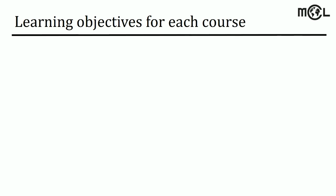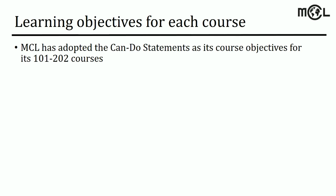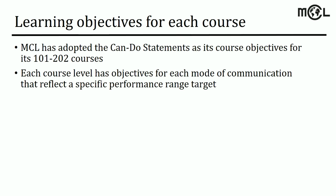Let's talk about the learning objectives for each course that relate to the language modes of communication. We have adopted as a department the can-do statements we saw at the end of the previous video as course objectives for our 101 to 202 courses. Each course level — 101 through 202 — has objectives for each mode of communication that reflect a specific performance range or proficiency level target.